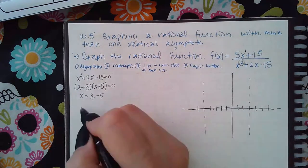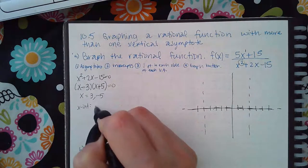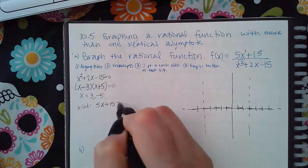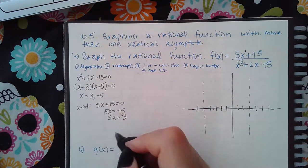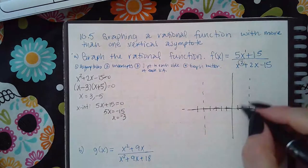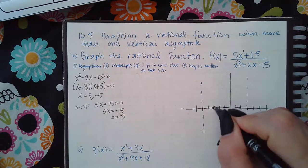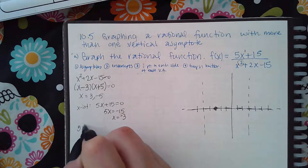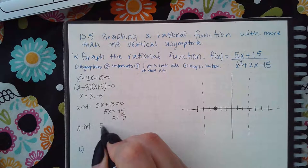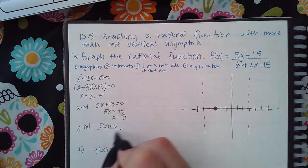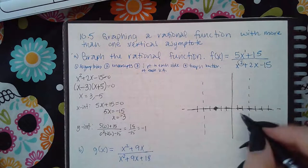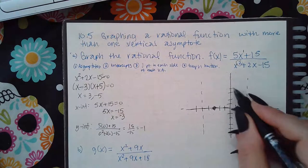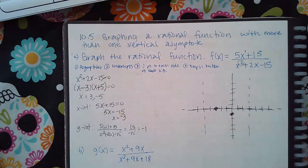For my x-intercepts, you take the numerator and set it equal to zero. That means I have an x-intercept at x equals two or three. Then you do the y-intercept by plugging in zero, and I get 15 over negative 15, which is negative one. So that's plotted there.